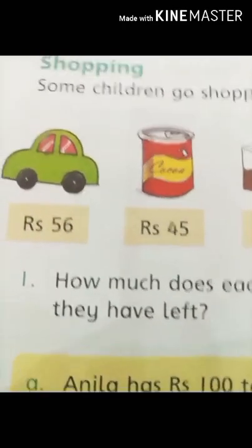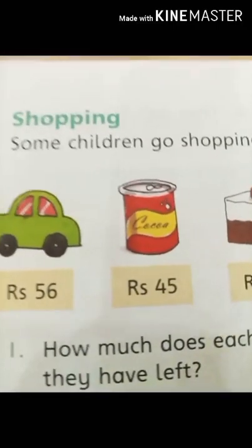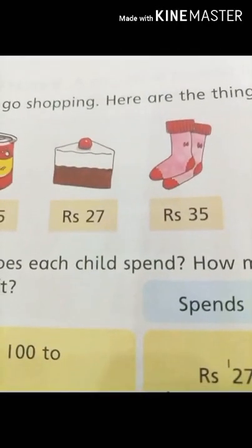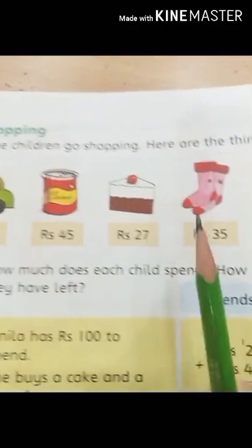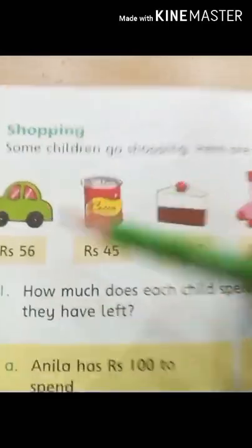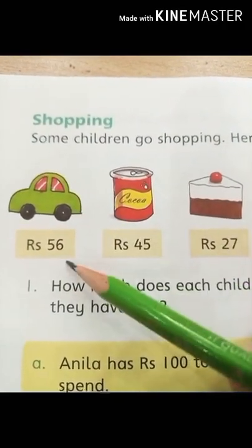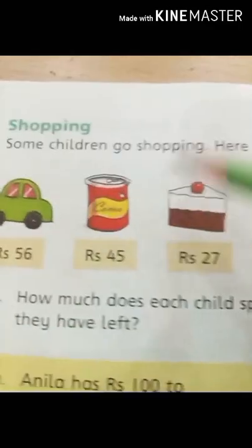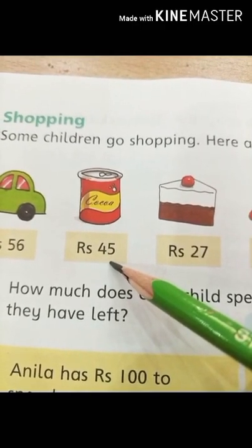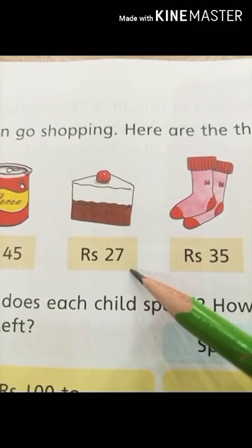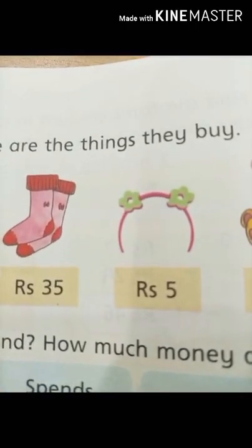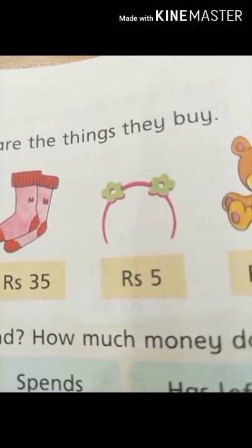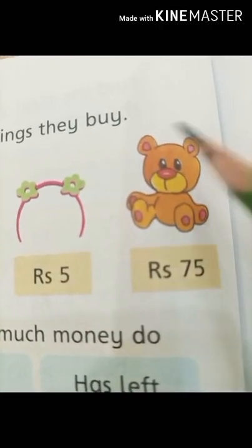First of all, look at this. The first statement is: some children go shopping — you and some of your friends and siblings are going for shopping. Here are the things they buy: a toy car costing 56 rupees, a cocoa that is 45 rupees, a piece of cake that is 27 rupees, socks costing 35 rupees, a flower hairband for 5 rupees, and a teddy bear toy for 75 rupees.